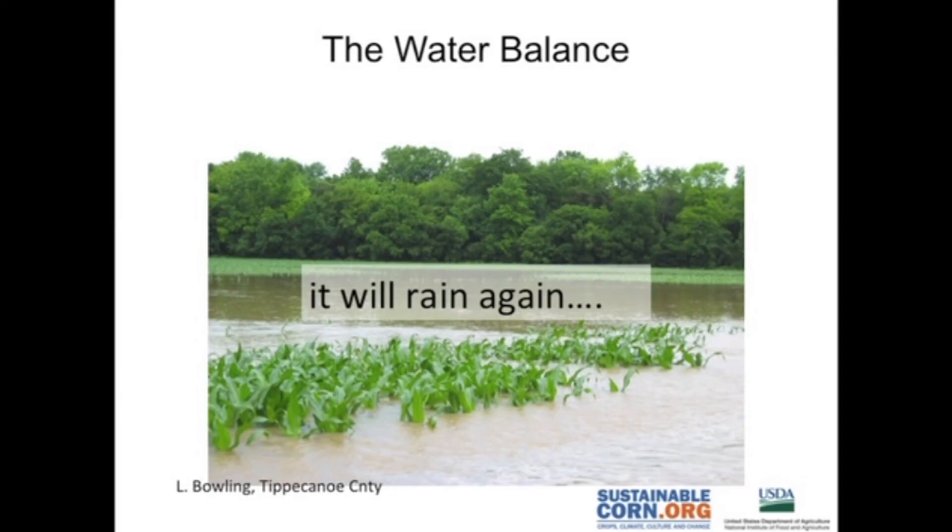Over long-term timescales not undergoing much change, we often simplify the water balance by neglecting storage terms. But at shorter timescales or periods of change — even like global climate change, where the whole system is under change — we can't neglect those storage terms. My final thought: we've learned that water travels in a cycle, and so despite current conditions, it will rain again.